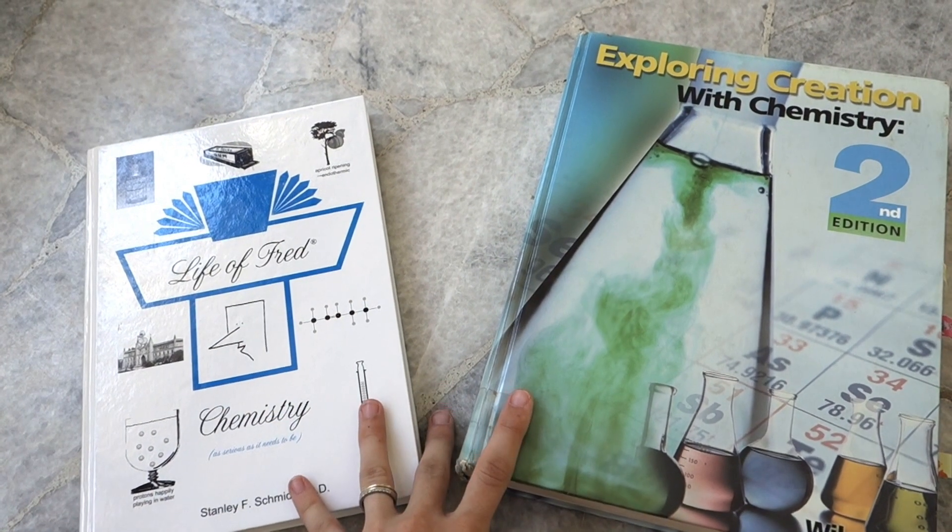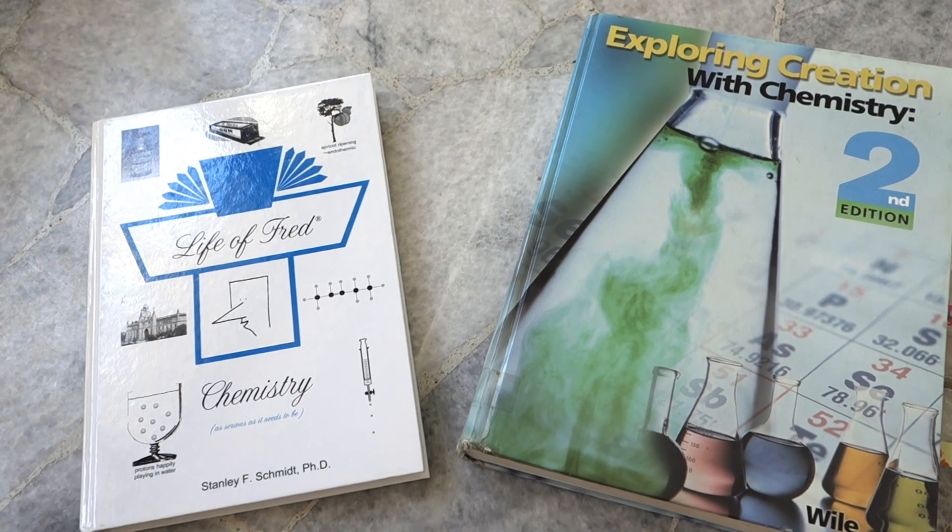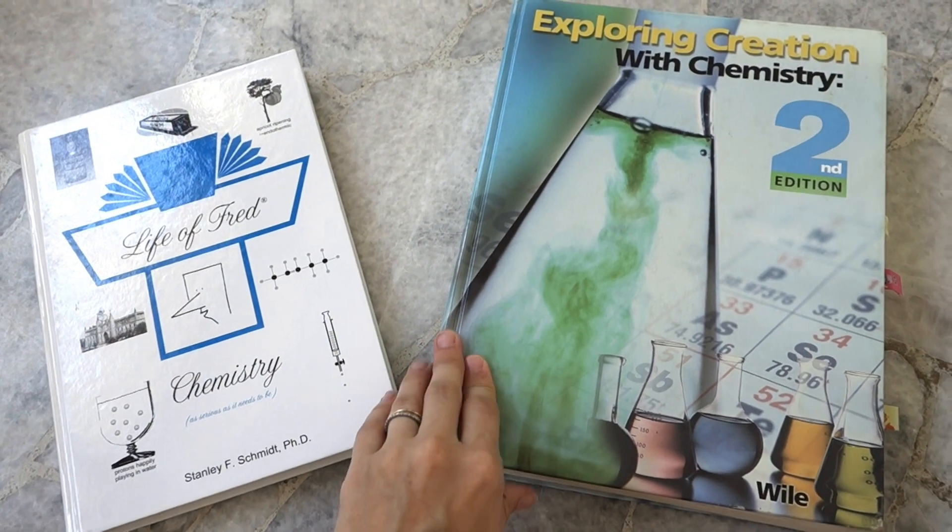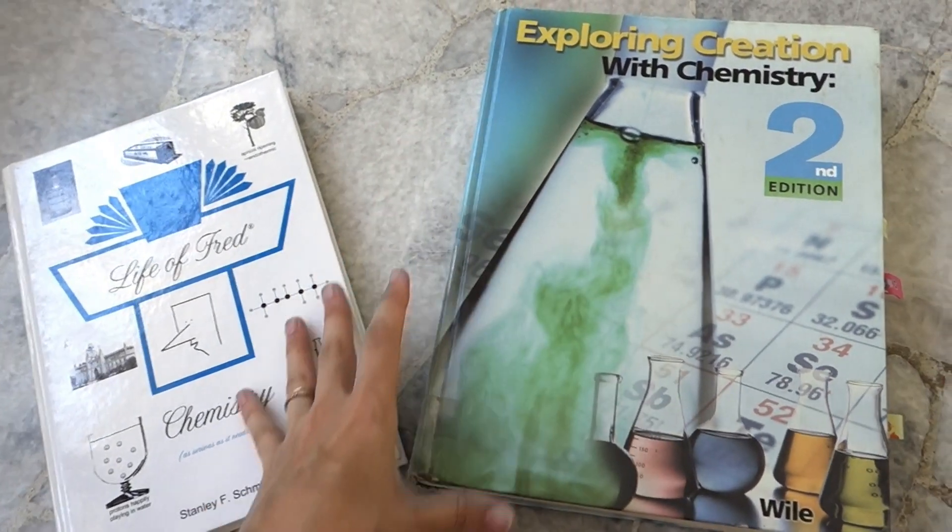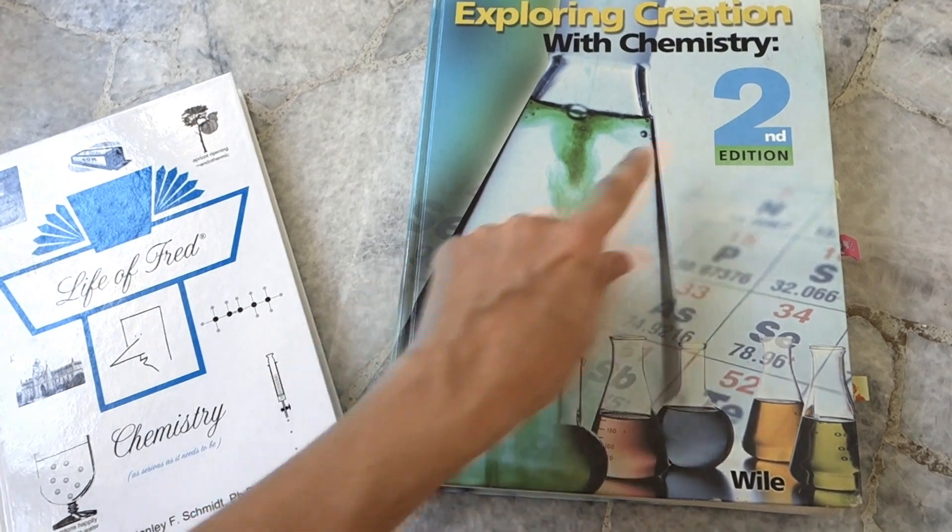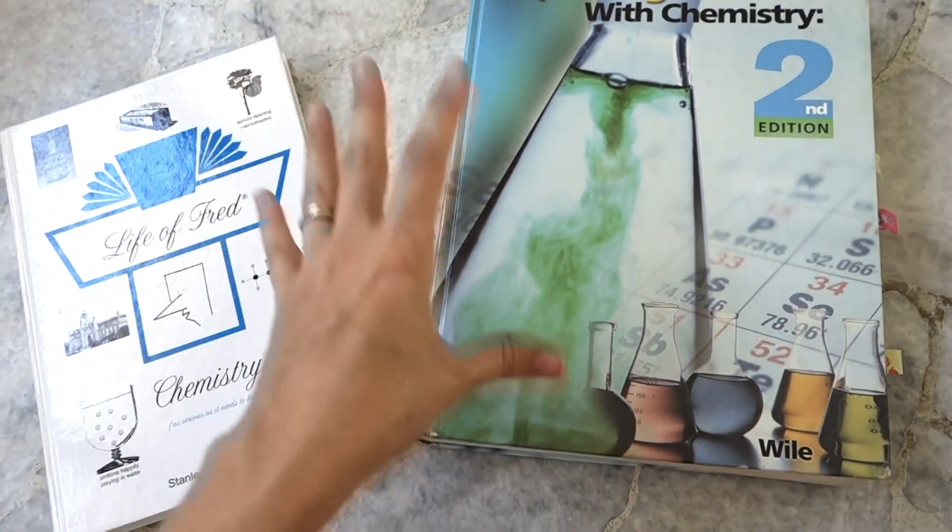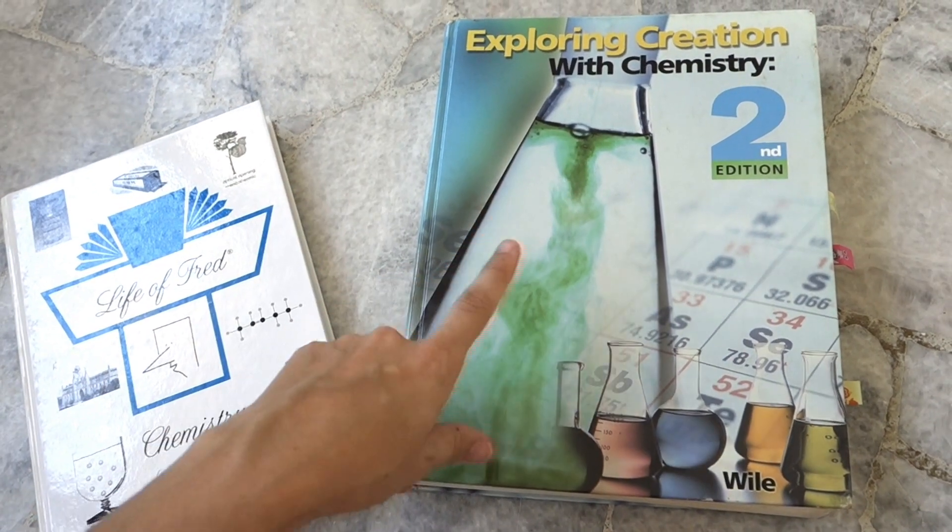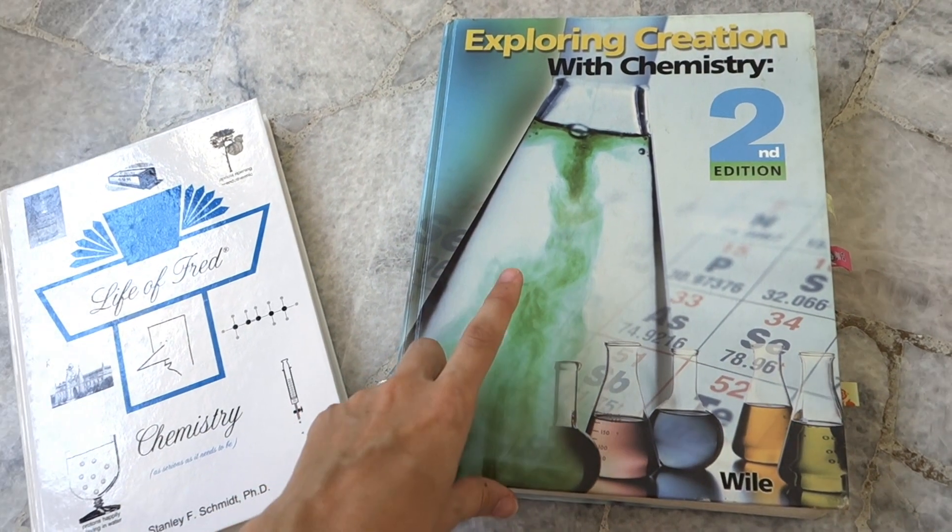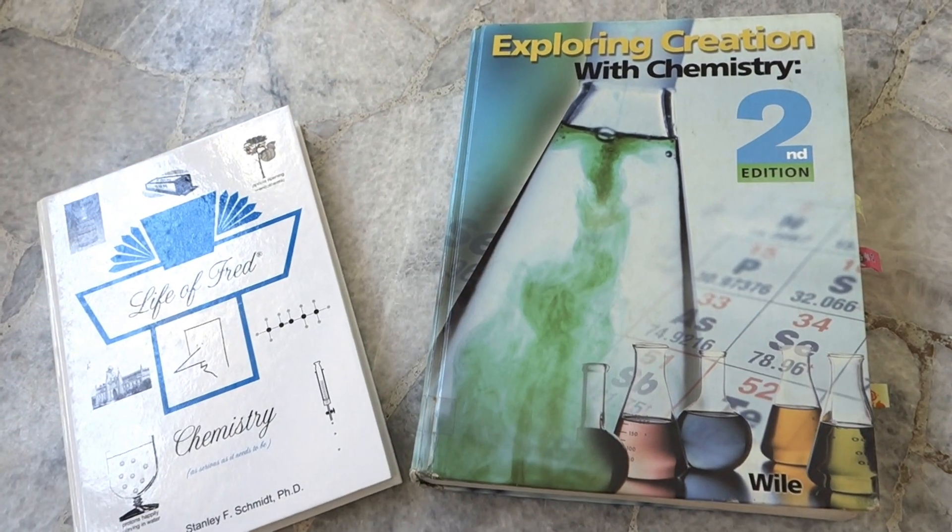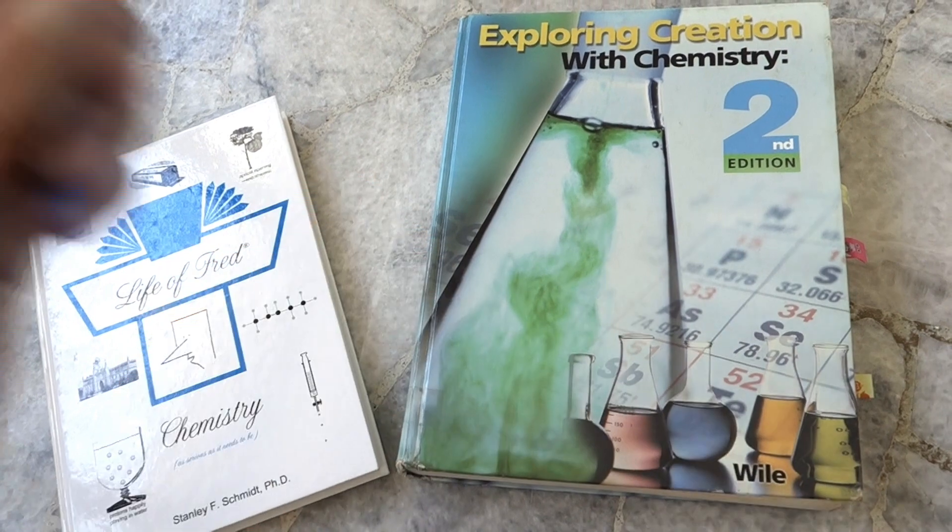Let's dive right into the two main resources that we are using with high school chemistry right now with our 10th grader. The core of our chemistry curriculum is this, Exploring Creation with Chemistry, second edition. We initially purchased this from Sunlight together with the Solutions and Tests book as well as the Supplies Kit for all of the experiments in the book and a schedule.